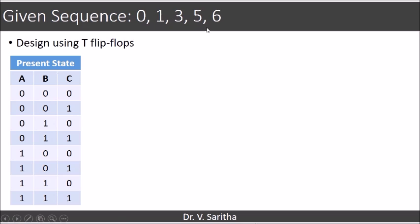On seeing this sequence we can understand that we require 3 bits in each state because 5, 1, 6 requires 3 bits. And we are assuming that we are using T flip-flops here.